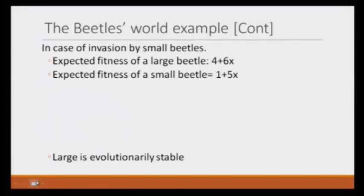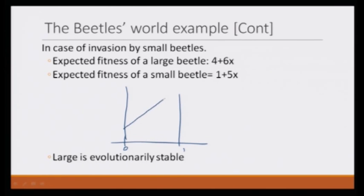In the case of invasion by small beetles: expected fitness of a large beetle is 4 plus 6x, and expected fitness of a small beetle is 1 plus 5x. Drawing the graph with x from 0 to 1: the large beetle goes from 4 up to 10, and the small beetle goes from 1 up to 6. Large always has better fitness than small. So small beetles would not be able to invade the population of large beetles. Therefore, large is evolutionary stable.